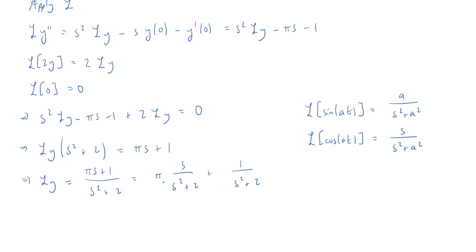So the π is just a constant, so I don't worry about that. This first one is s/(s² + 2), so my a would be √2. So I can rewrite this as π times the Laplace transform of cos(√2·t).